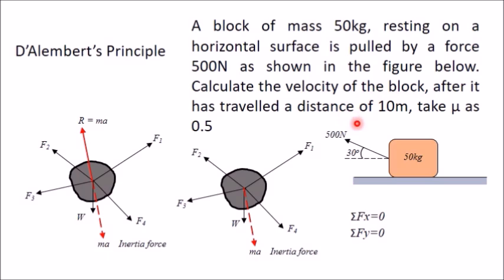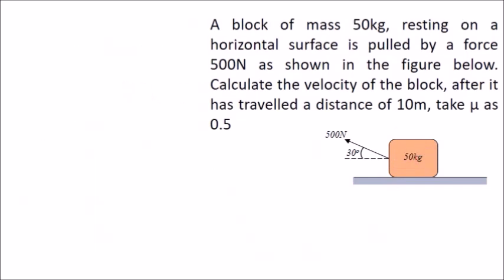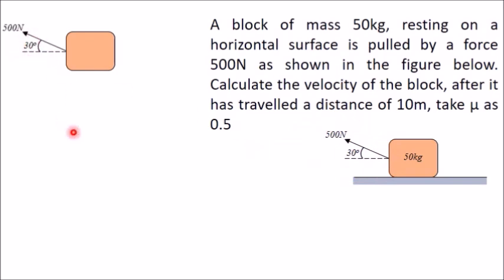We can calculate velocity if we know the acceleration of this block, because initially this block is at rest — that is, initial velocity is 0. So final velocity V can be obtained if we know the acceleration of this body. We can determine acceleration using D'Alembert's principle. For that, we have to draw the free body diagram of this block. I have drawn this free body diagram of the 50 kg block. Now there is one force — the 500 Newton external applied force — so first draw that.